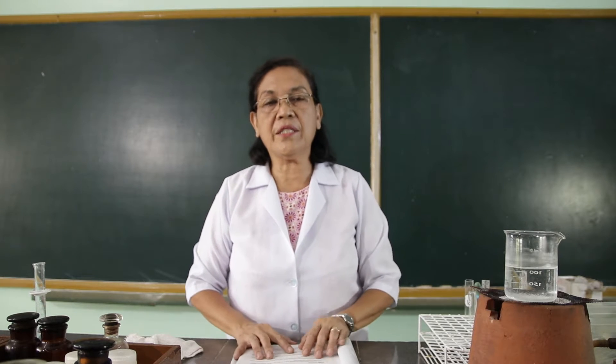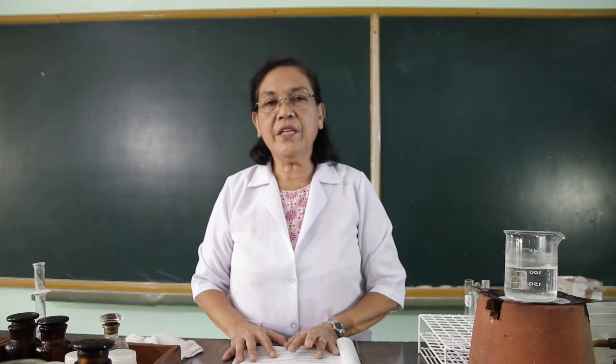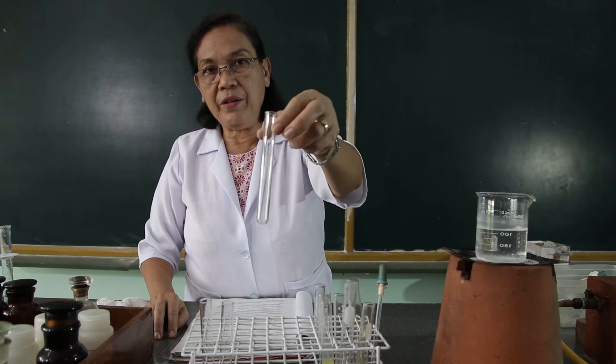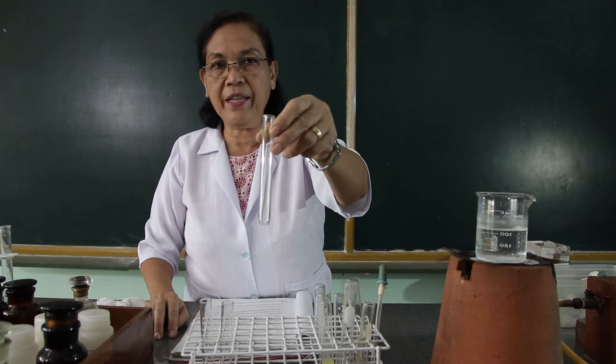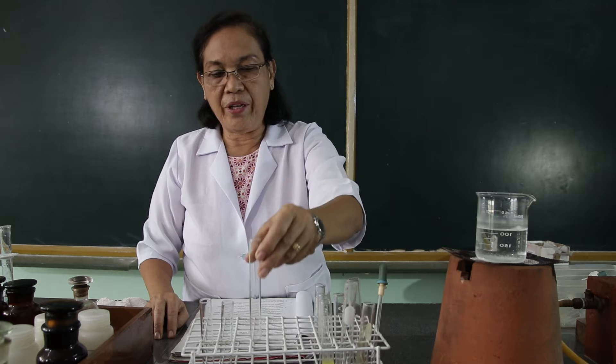The next procedure is to test the oxidation reaction of the alcohols. In this procedure, we are going to use the ethyl alcohol, the isopropyl alcohol, and the tertiary butyl alcohol. We will place these three different kinds of alcohol in three different test tubes. For this first test tube, we are going to fill this with ethyl alcohol.